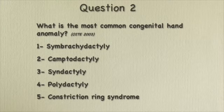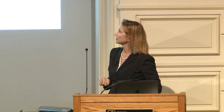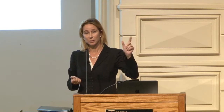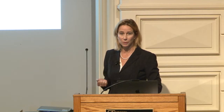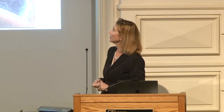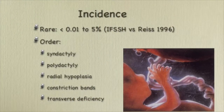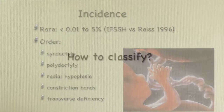What's the most common congenital anomaly, Derek? Syndactyly and polydactyly — in my population it's actually polydactyly, but worldwide it seems to be syndactyly. The incidence is in that order, with radial hypoplasia being not all that uncommon — I actually see a lot of it in my pediatric clinic.